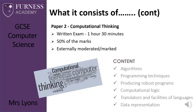Paper 2 is all about computational thinking and we've done this during Key Stage 3, so we'll build on the knowledge and the skills that you have learned and take them further. We'll still be looking at algorithms like flowcharts and pseudocode and we'll look at programming techniques and how we develop them to produce robust programs.